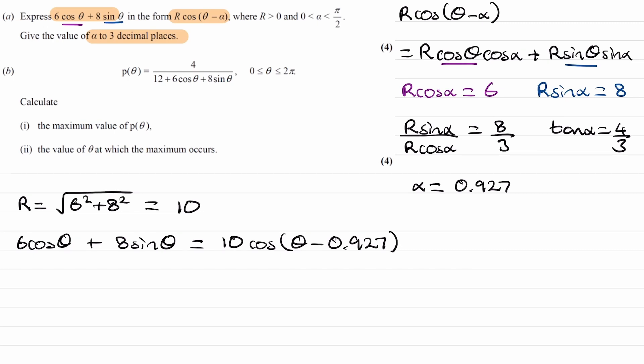And for part B, we have p theta is equal to 4 over 12 plus 6 cos theta plus 8 sin theta. And then we're trying to find out the maximum value of p theta. So to do this, let's first rewrite p theta as 4 over 12 plus, and the 6 cos theta plus 8 sin theta becomes 10 cos theta minus 0.927.